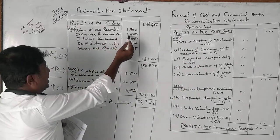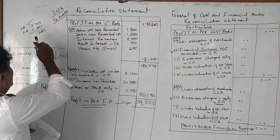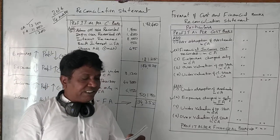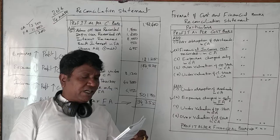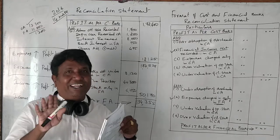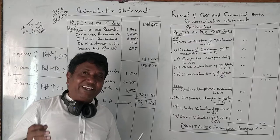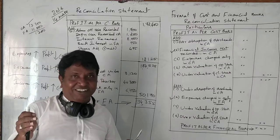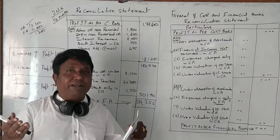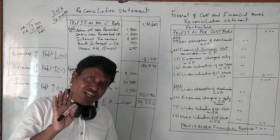Depreciation over-recorded is 8,200. Next item: interest received but not included in cost accounting. Interest received is an income, and income is not included in costing.